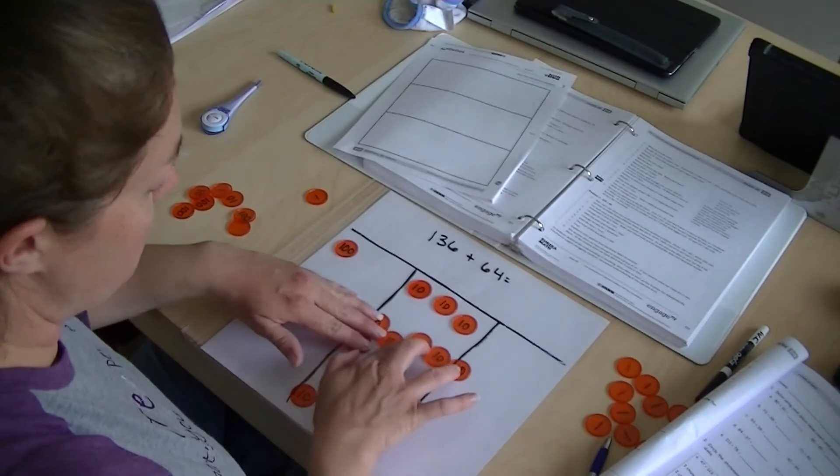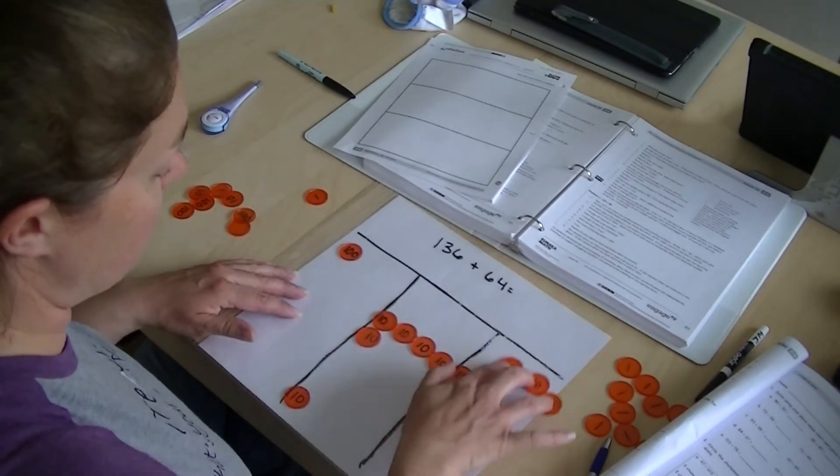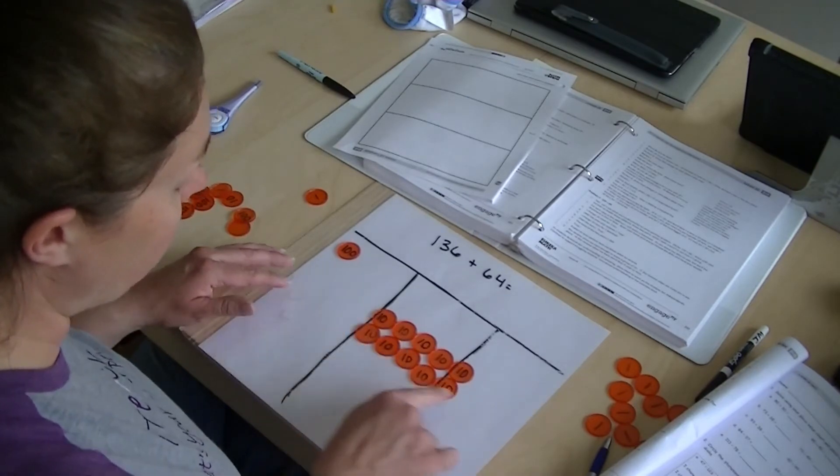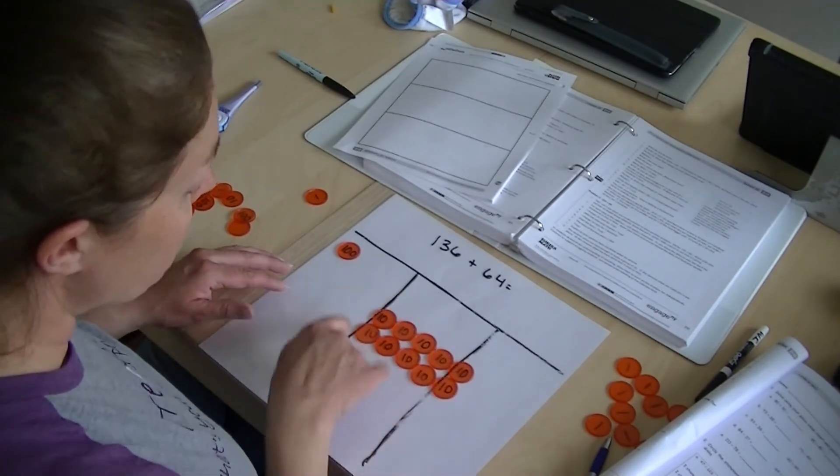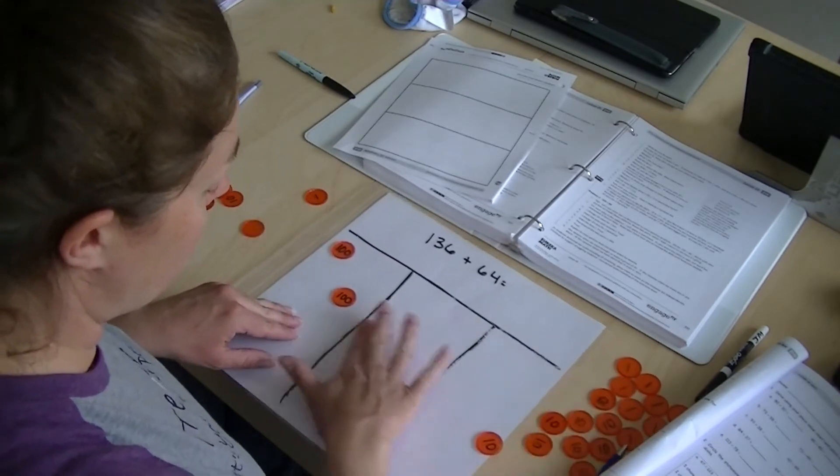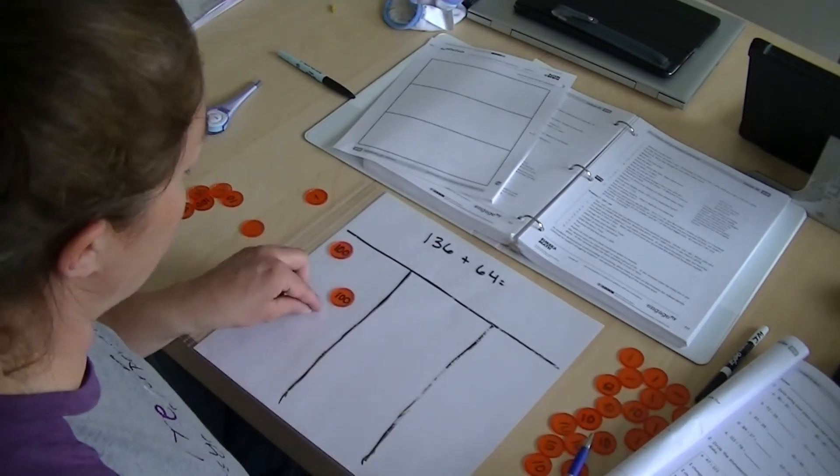And then we can add all the tens together. Those three go there, this one comes here. And look, I have another group of 10. So this 10 also bundles and becomes a hundred. Let's go away from the tens because now they're a hundred.